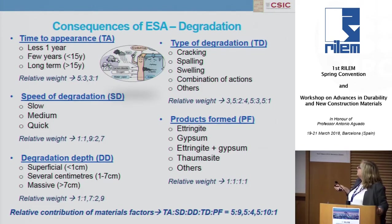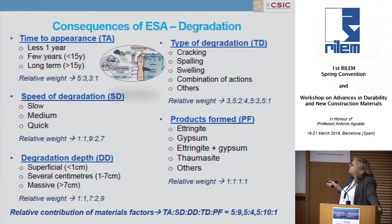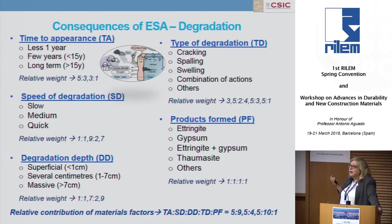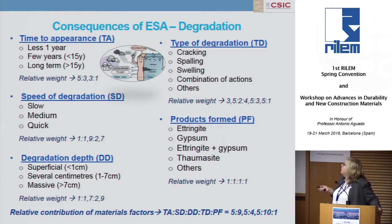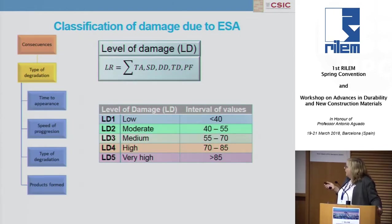With respect to the type of degradation, we have separated into groups: cracking, spalling, swelling, and combination with other actions like corrosion or other possibilities. With respect to the product formed, we have defined different groups: ettringite, gypsum, ettringite plus gypsum, thaumasite, and others. Also, as mentioned before, there is not a direct relationship between the product formed and the deterioration or damage of a structure — the relative weight of this parameter is therefore not too high.